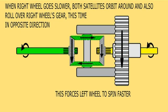Now, imagine you have to make a right turn. In this case, the right wheel is forced to turn more slowly. The same thing happens as in the previous case, except that now the satellites roll over the gear that is coupled to the right wheel, thus forcing the left wheel to move faster.